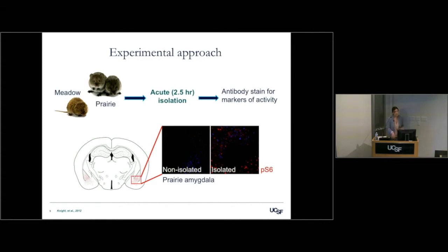If we look at the control condition of non-isolated prairie voles that have been group-housed, we see a pretty low level of baseline activity in the amygdala. If we then isolate the prairie voles, we see active neurons in this region. But this may just be a generalized response to a change in social environment, and if so we'd expect to see it in meadow voles as well — and we do. So it's marking something about a change to the environment and to the isolation.